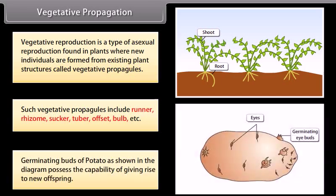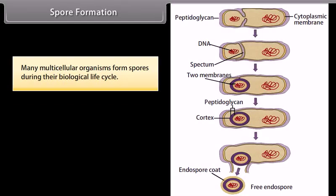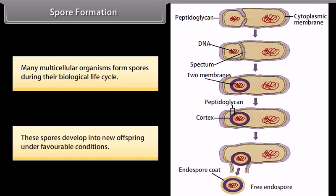Germinating buds of potato, as shown in the diagram, possess the capability of giving rise to new offspring. Many multicellular organisms form spores during their biological life cycle. These spores develop into new offspring under favourable conditions.